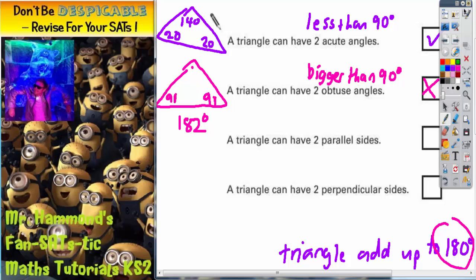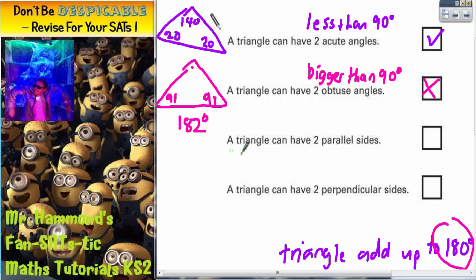Let's get a different color for the third statement. A triangle can have two parallel sides. Well, parallel sides is a name given for sides or lines that are not going towards each other, that are not going away from each other, that are the same distance apart all the way along.